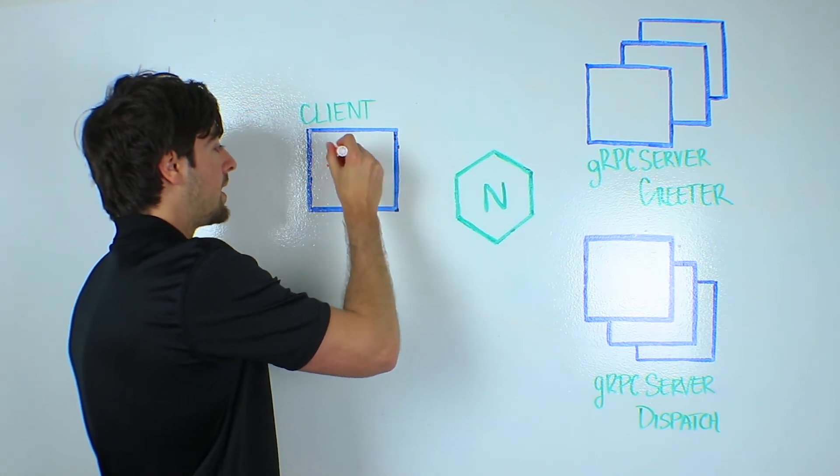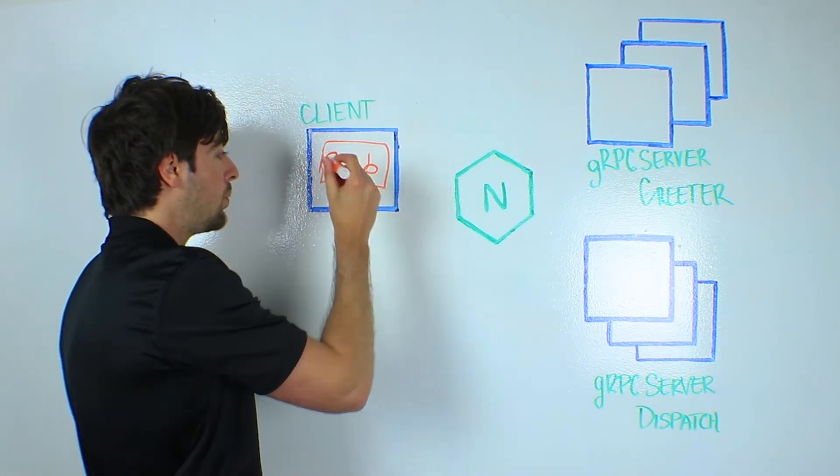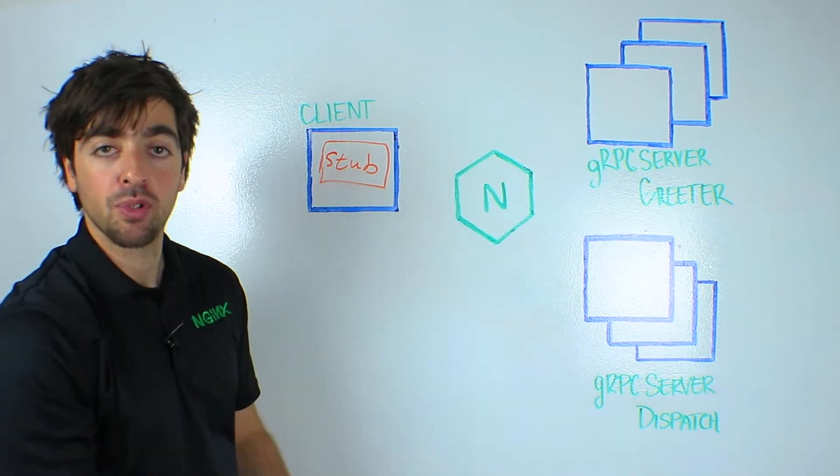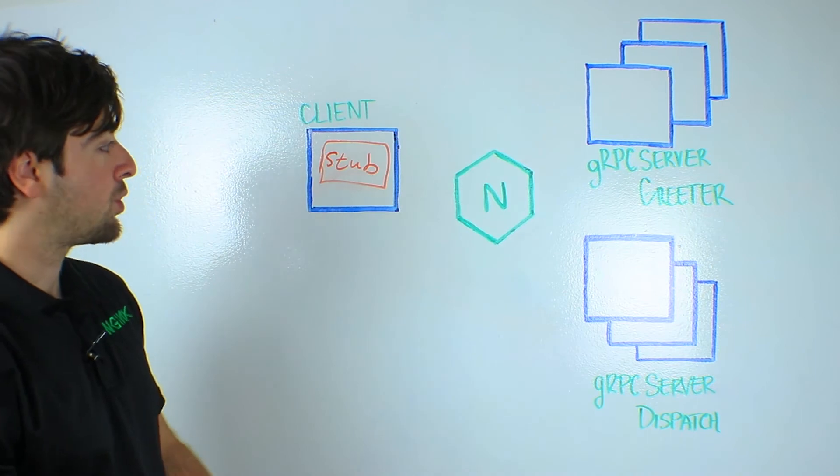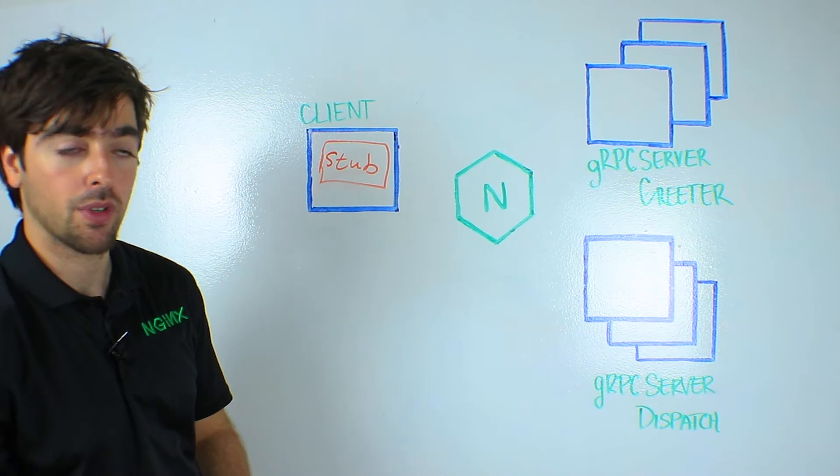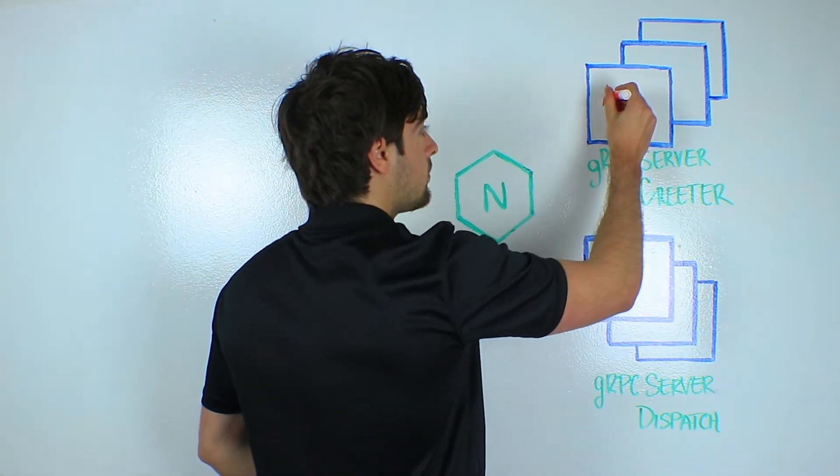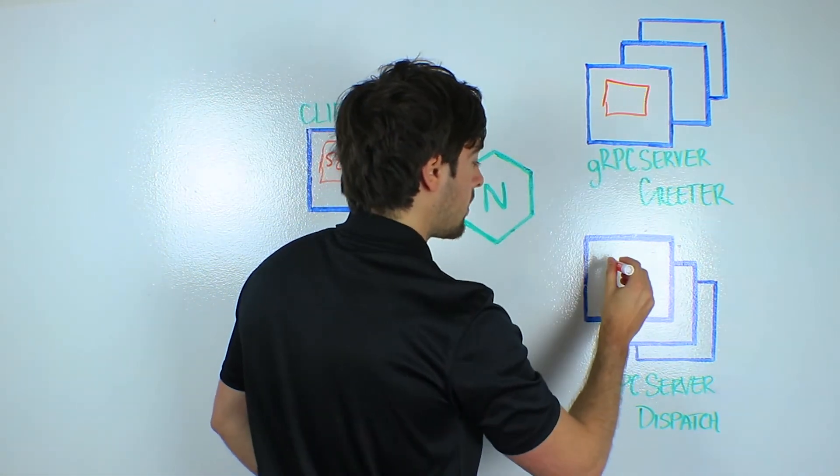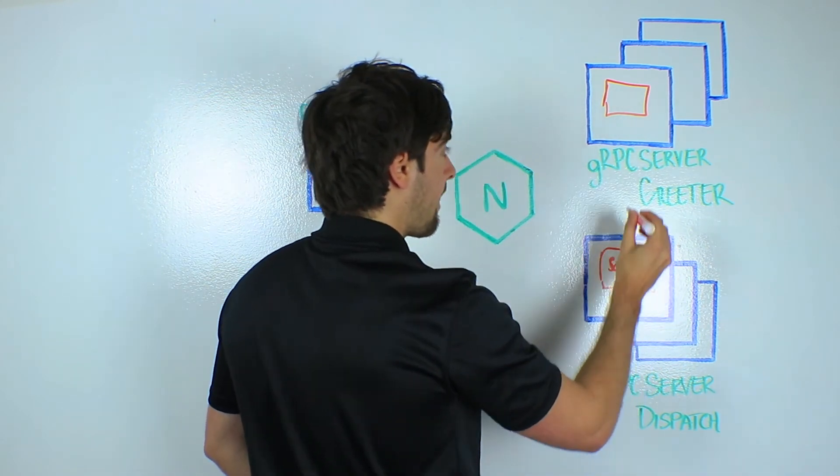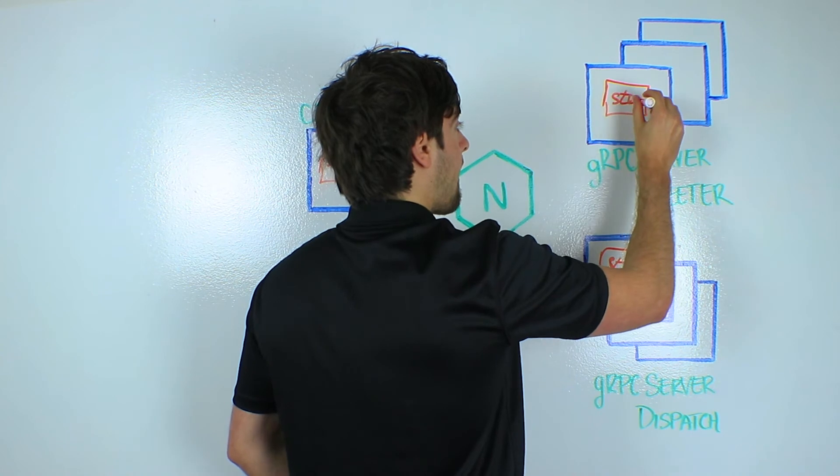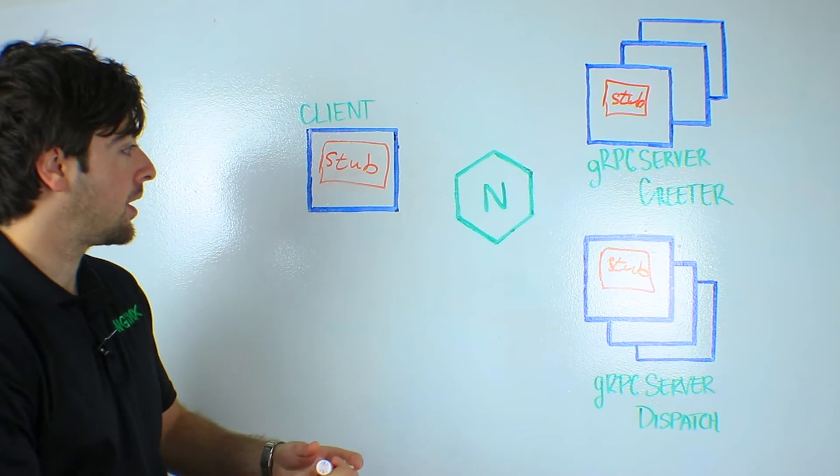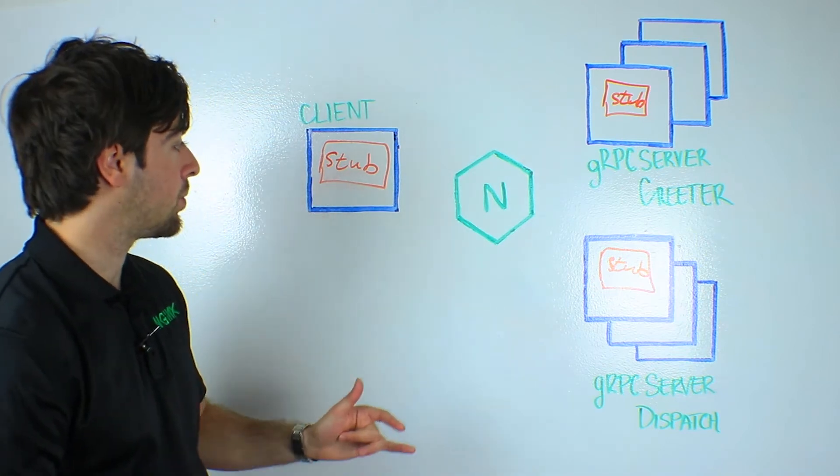So once we can create a client stub, we can use that stub to send requests through to Nginx and to your upstream servers. So in order to complete the remote procedure call you would have to generate stubs on every one of your servers, and once you're done with doing that, now you can start reverse proxy requests.